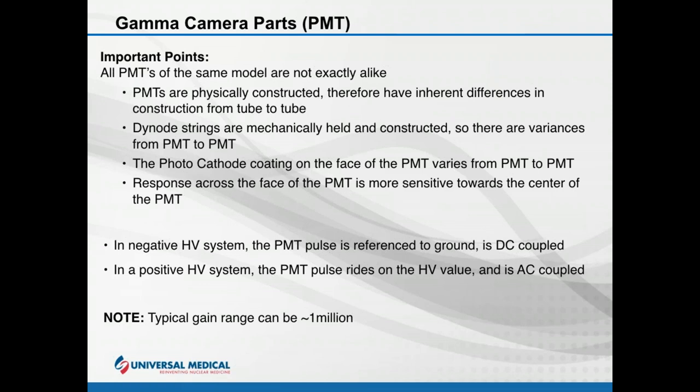Things to think about: photomultiplier tubes are not all exactly alike — they are physically constructed items and there will be differences from tube to tube, including how dynodes are aligned, and variances in photocathode coating from PMT to PMT. Even the response across a single PMT can vary from left side to right side. PMTs come in two basic families: negative high voltage and positive high voltage.